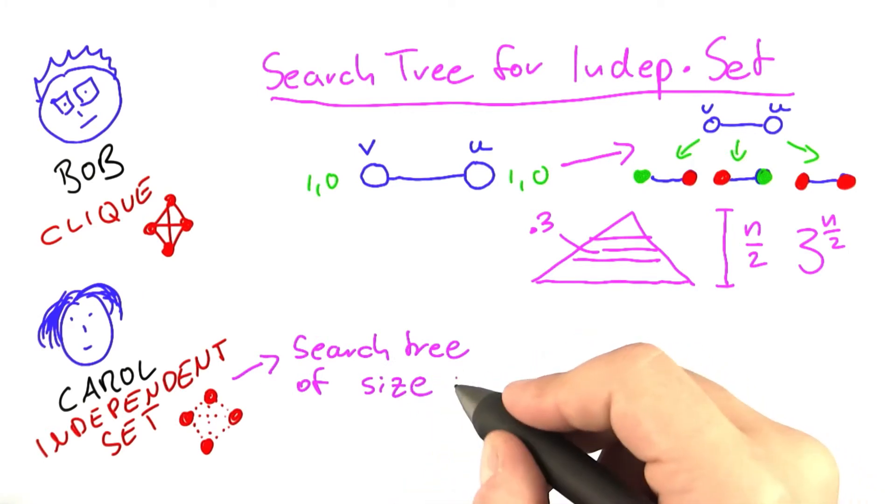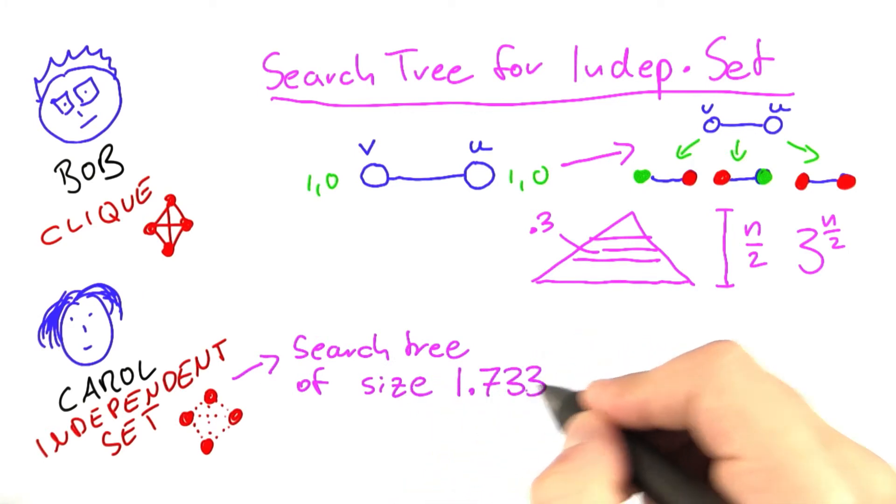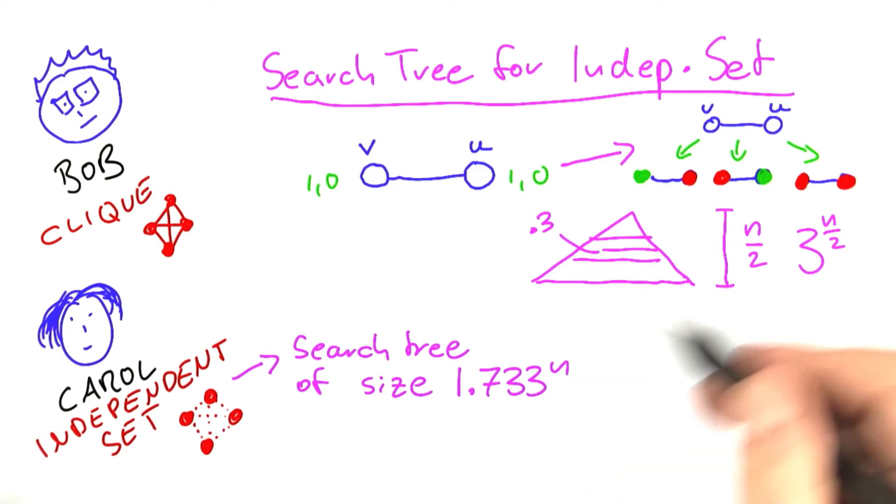For independent set, we have a search tree of size 1.733 to the power of n. Just like vertex cover, the calculation here is the same.